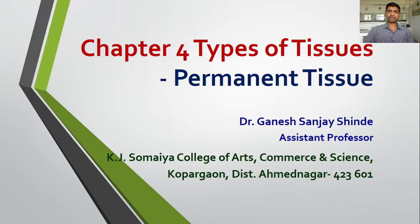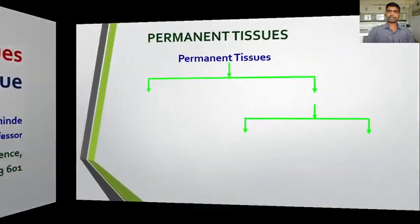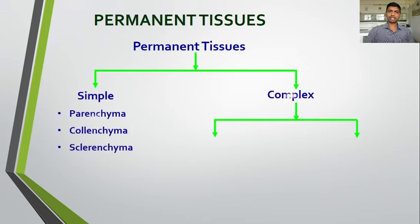From meristematic tissue we are going towards the permanent tissue. These tissues are developed from the meristematic tissue; they develop and perform a specific function and form a permanent structure, so these tissues are called as the permanent tissue. The permanent tissues are divided into two types: simple tissue and complex tissue.